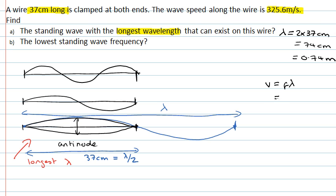We've already calculated the longest wavelength, so the frequency is the wave speed divided by the wavelength, which is 325.6 divided by 0.74. Typing that into the calculator gives the answer 440, and the unit of frequency is hertz, where one hertz is one vibration per second.